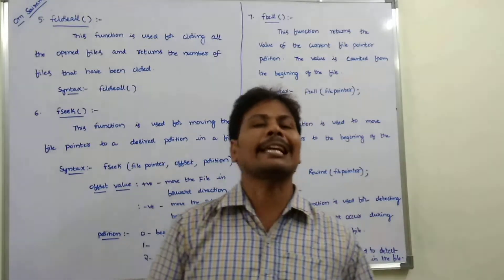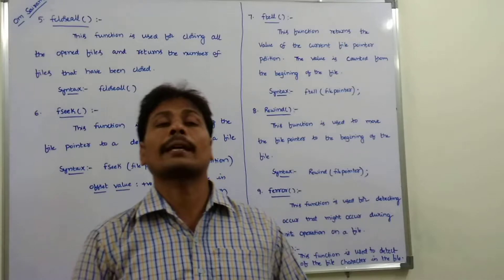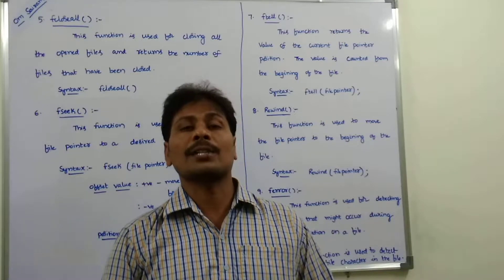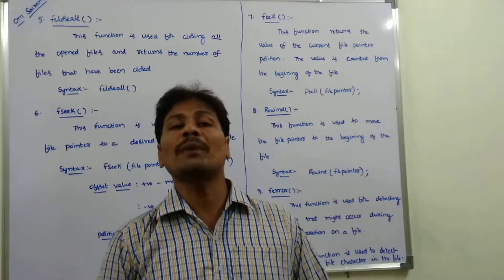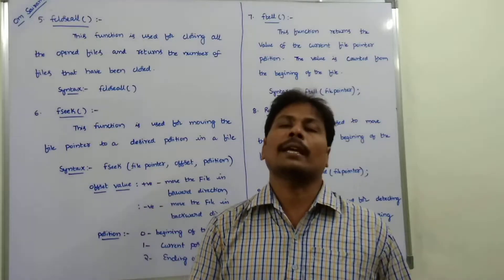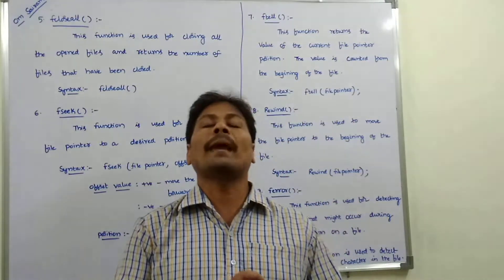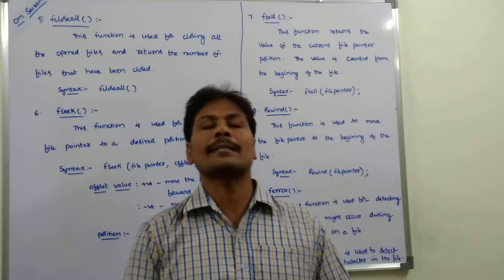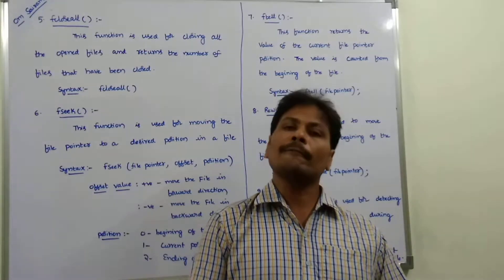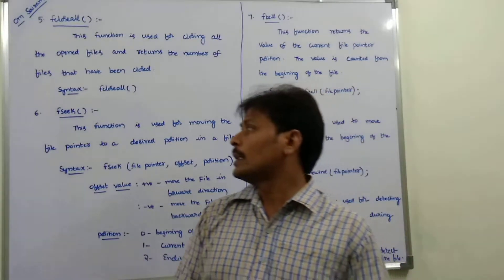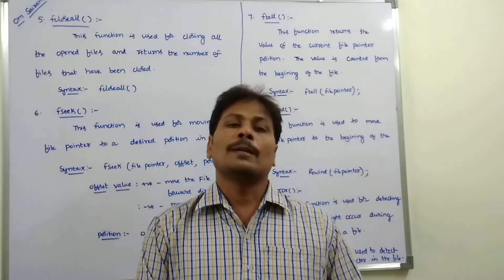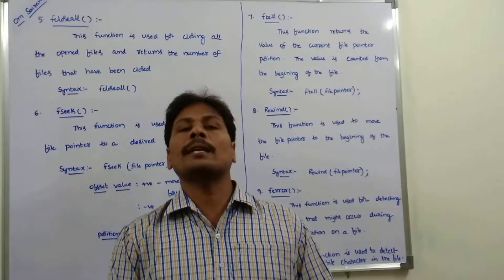Another difference: fclose returns nothing, but fcloseall returns how many files have been closed. These are the main differences between fclose and fcloseall.